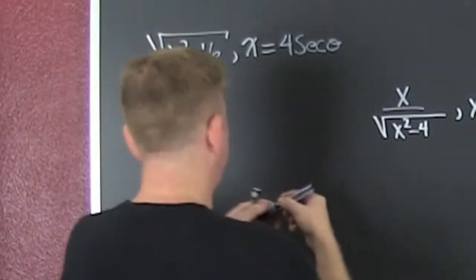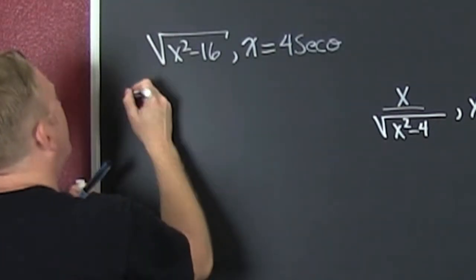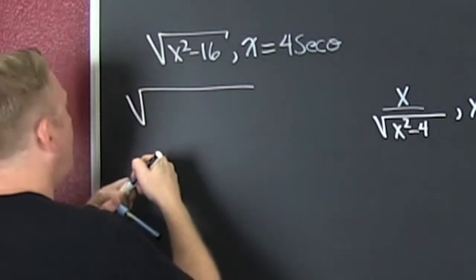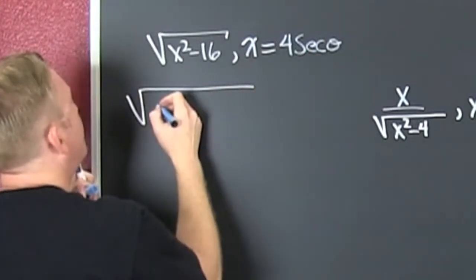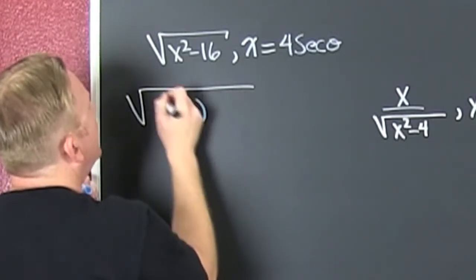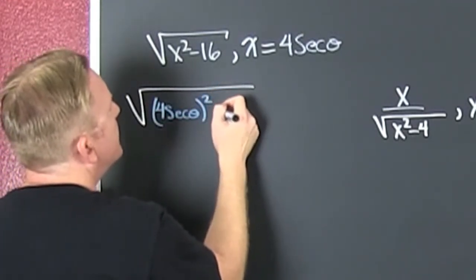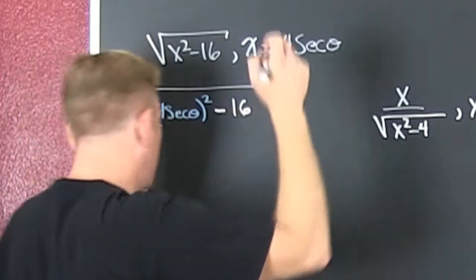They want us to make the appropriate substitution, so put me in coach. I'm ready to play today. They want us to have our x to be that, so we're gonna let our x be that, and that's that 4 secant theta, and then we're gonna square the dang thing, and then we're gonna subtract off that 16. Then we're gonna subtract off that 16. Sick!